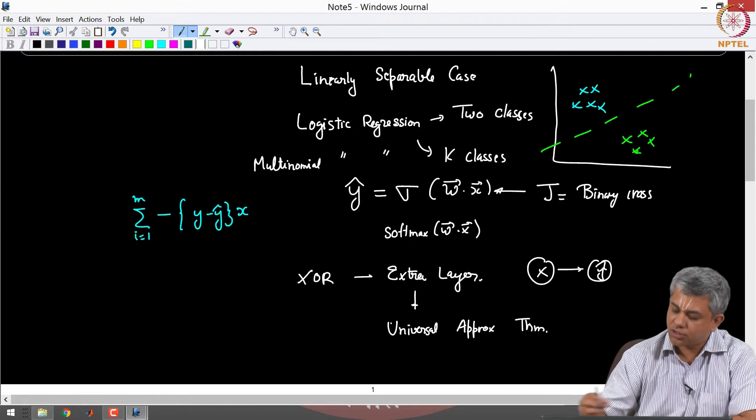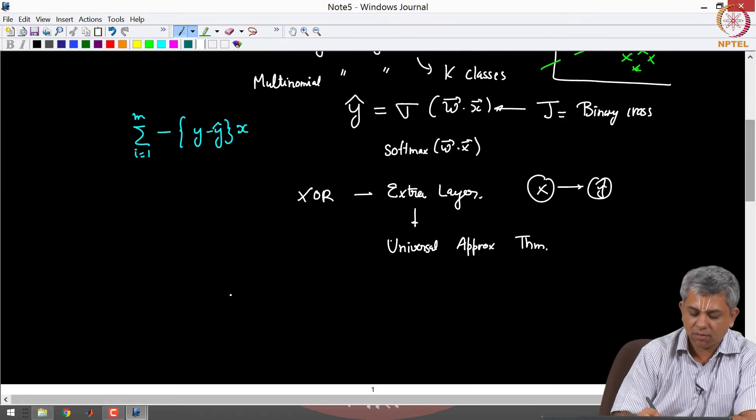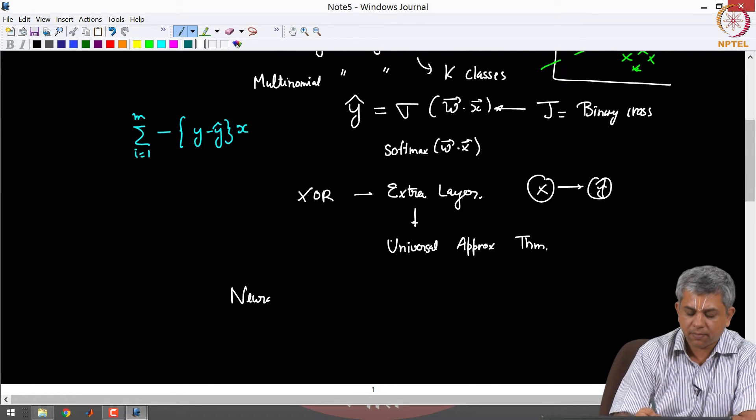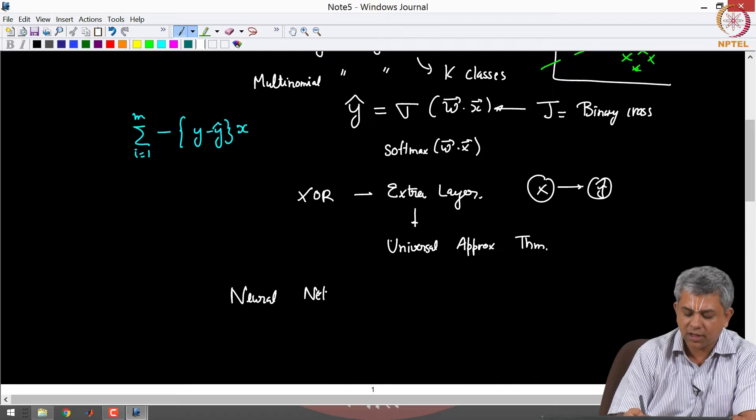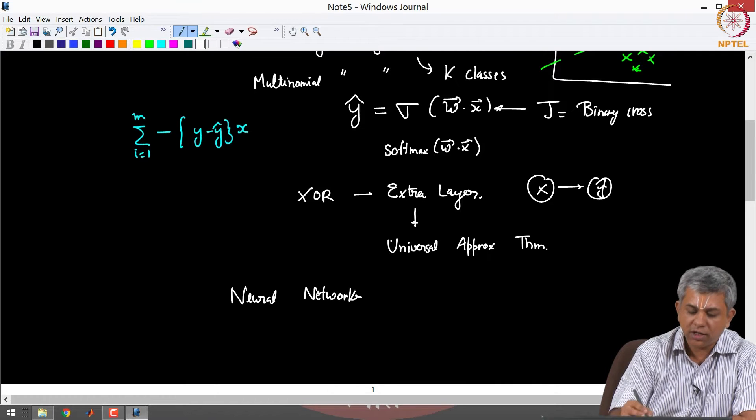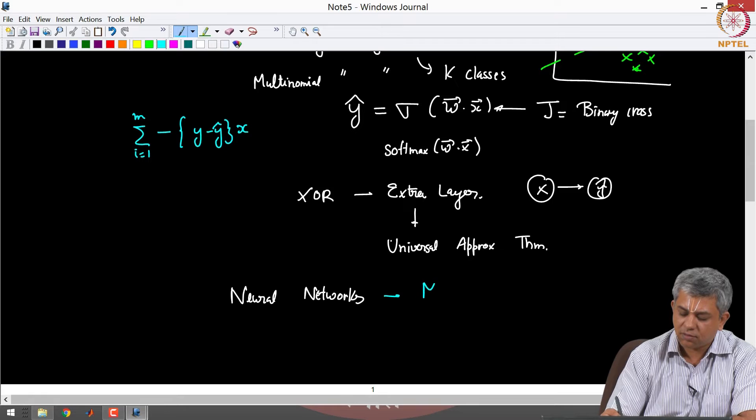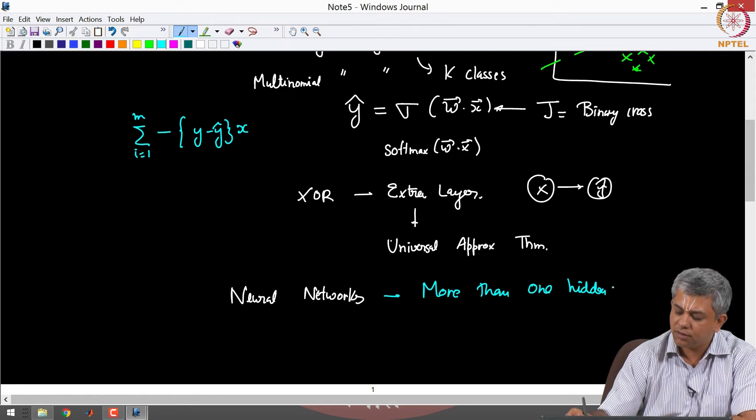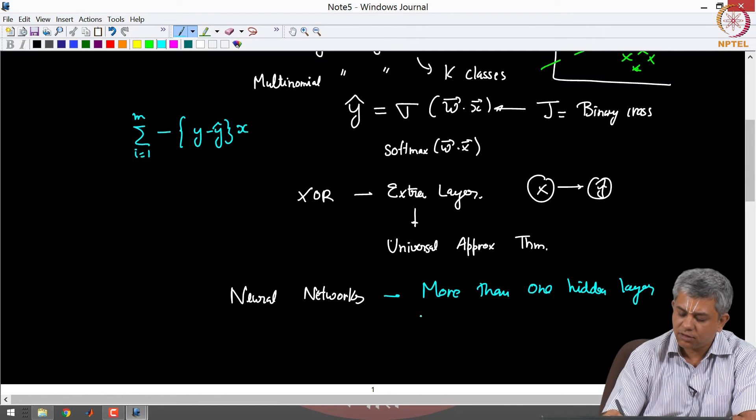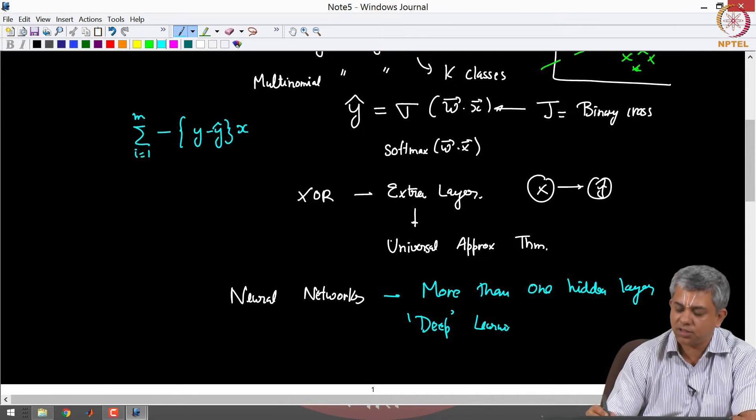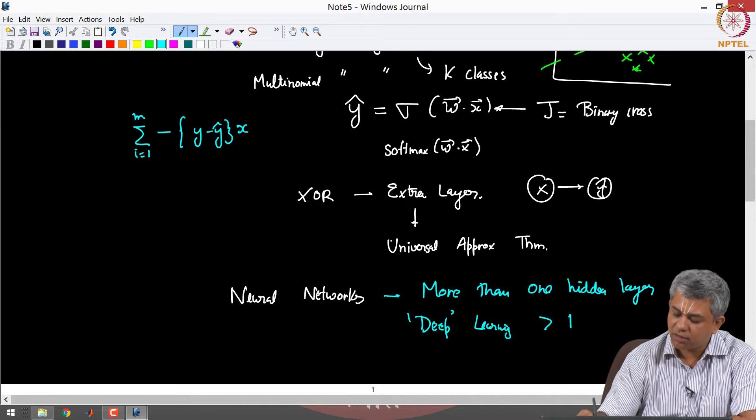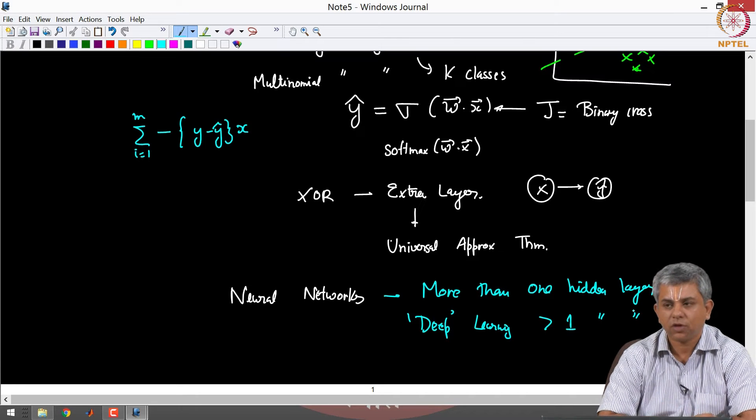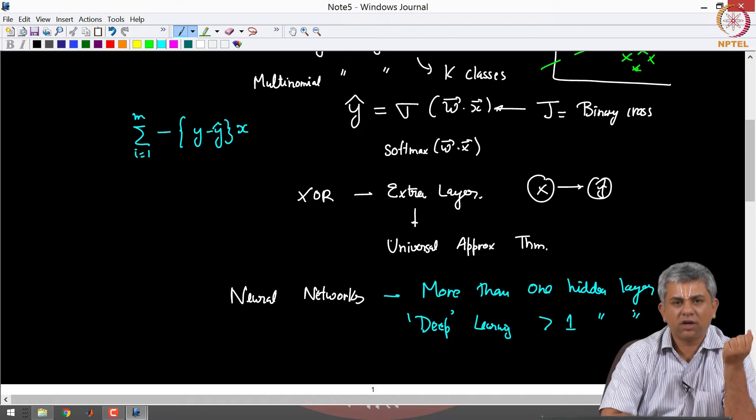Neural networks however use more than one hidden layer and there is some disagreement in the literature on this. More than one hidden layer is what is called deep learning. Deep learning simply means greater than one hidden layer.